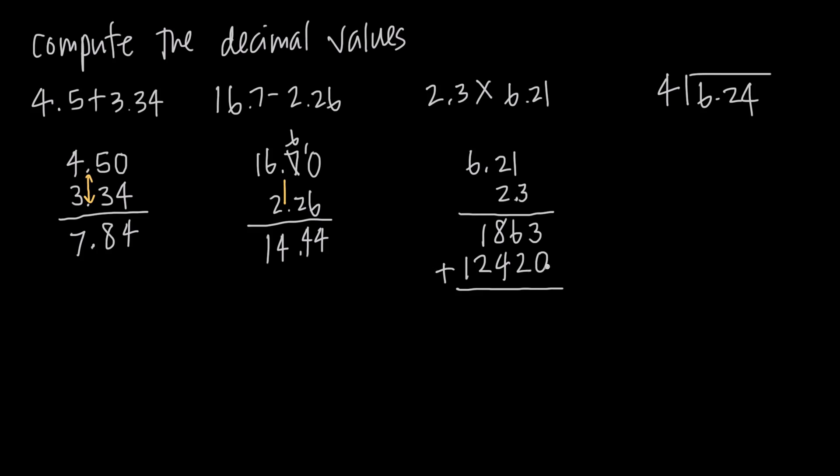This is, again, just like a regular multiplication problem. 3 plus 0 is 3. 6 plus 2 is 8. 8 plus 4 is 12. Carry the 1. 1 plus 1 is 2. Plus 2 is 4. And we have 1 out here in front. So now we've done this like a regular multiplication problem.